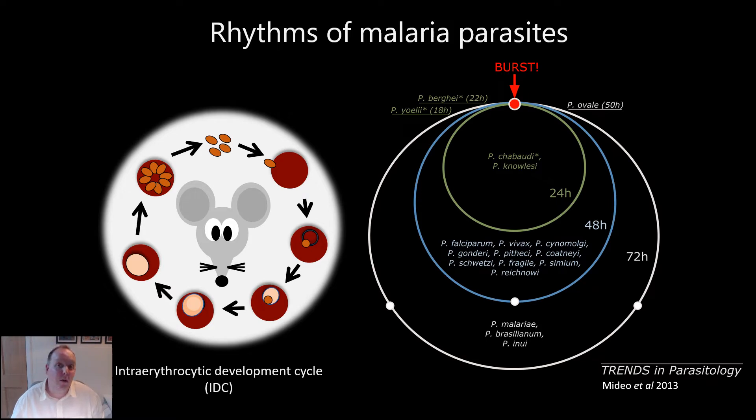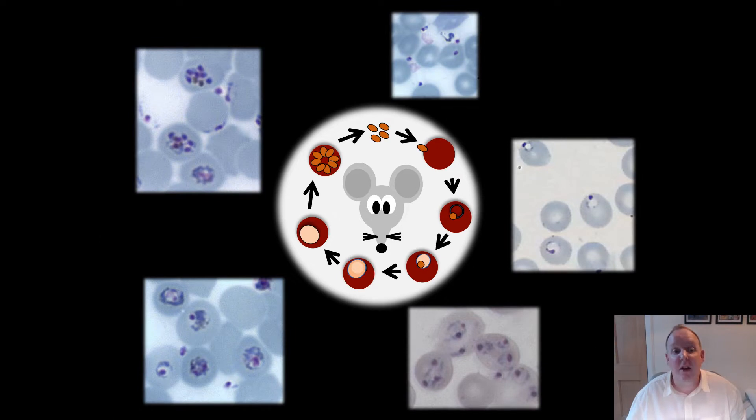But cycles of multiples of 24 hours are found across many malaria species. For example, the human malaria species have cycles of 24, 48, and 72 hours. And just to give you an idea of what the parasites really look like, here's some pictures.